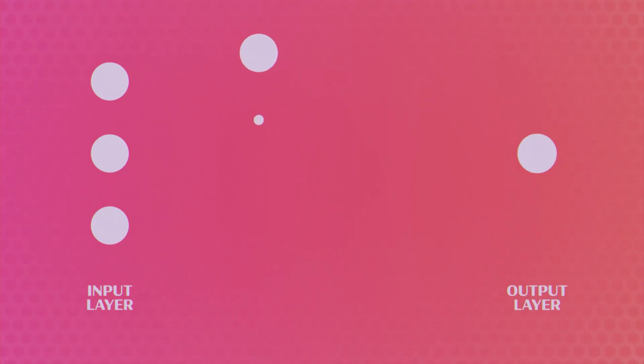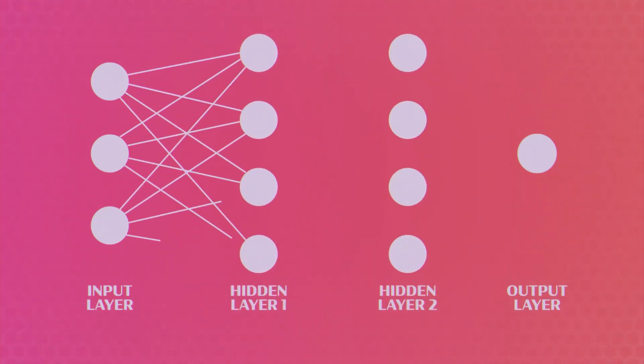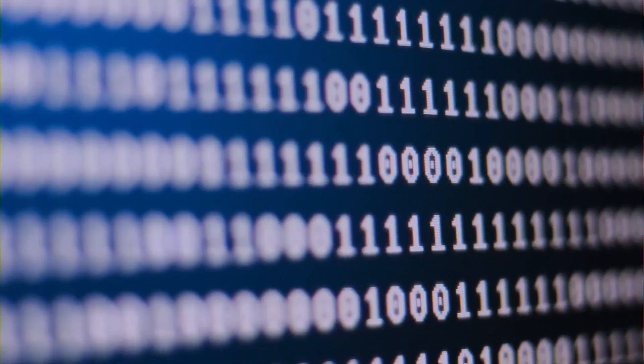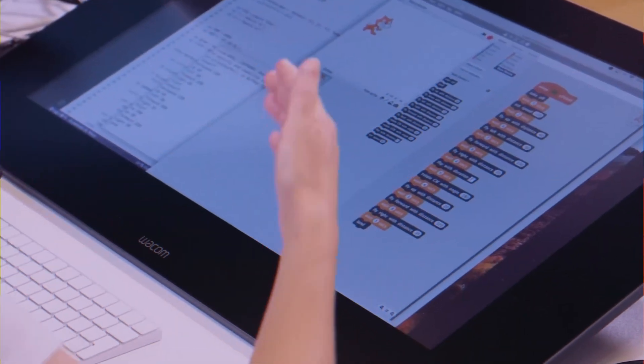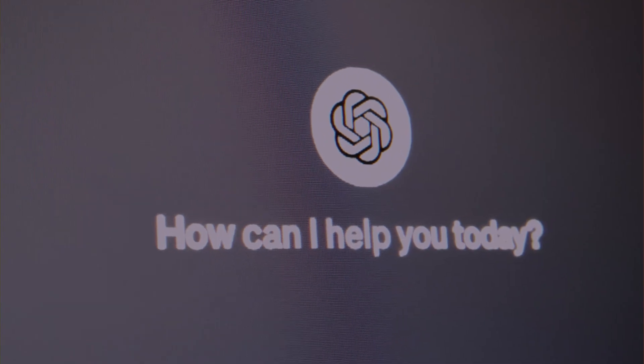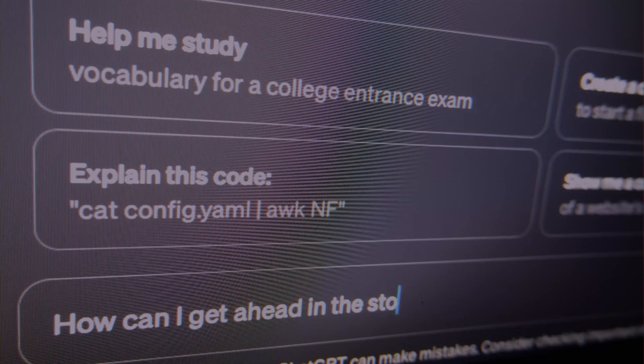When an AI learns something new, its internal wiring, its neural weights, are updated. This update process is messy. The new information doesn't just find an empty spot to settle in. It overwrites the existing connections. In the process of learning Task B, the model can catastrophically destroy its ability to perform the Task A it had previously mastered. The MIT researchers were honest about this limitation. Their experiments showed that as the SEAL model performed more and more self-edits, learning new fact after new fact, its performance on the earlier facts began to decay. The heat map in their paper is a stark visualization of this. A slow, steady erosion of old knowledge as new knowledge is crammed in. This is the great challenge of continual learning. How do you teach an AI something new without making it forget something old?